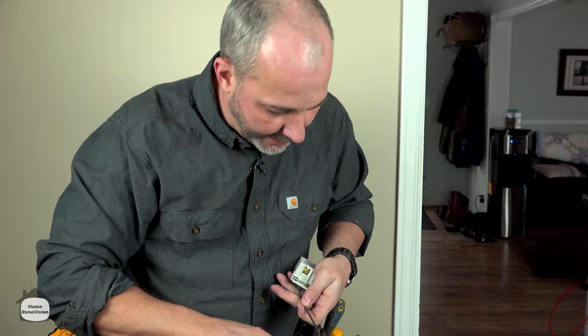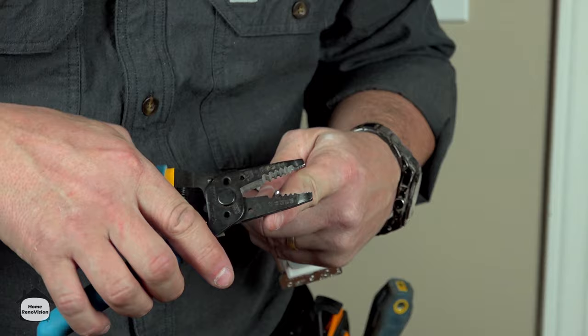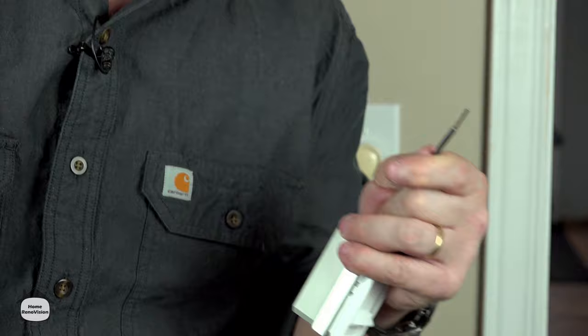So what you need is a set of strippers and you have your gauge on here. Home wiring is 14 gauge almost exclusively. So you find the number 14, you back it up the length that you need, you pinch, give it a twist and it slides right off. This is designed to remove the covering around the wire without damaging the wire.